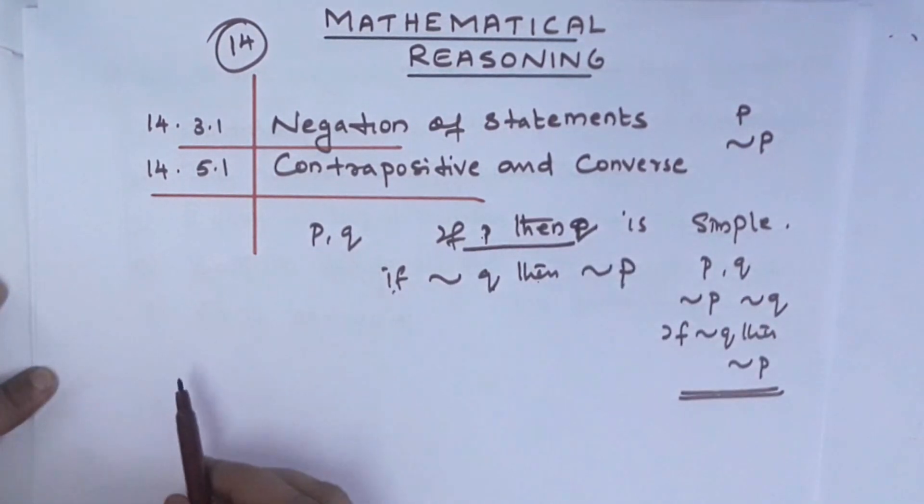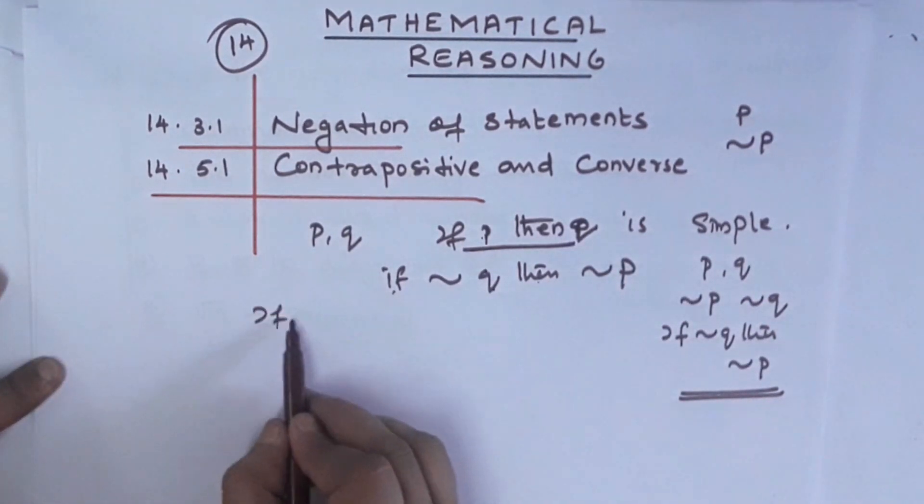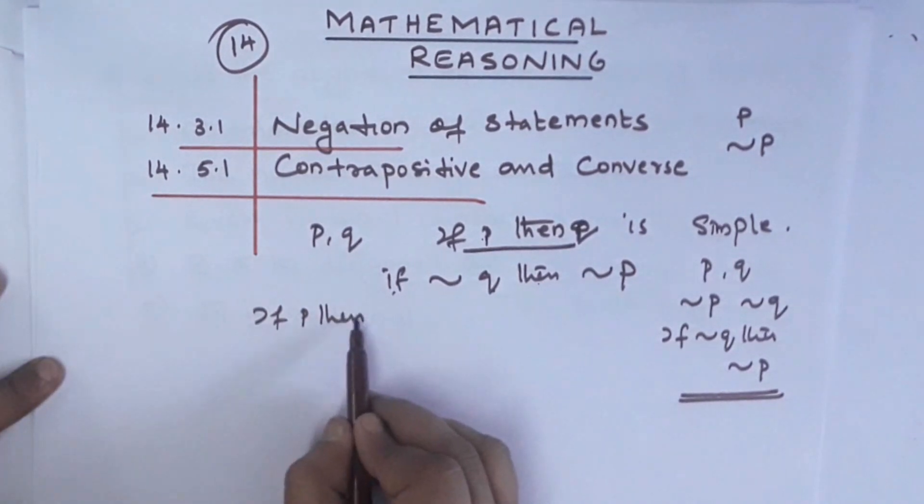Now this is the Converse. Converse: If P then Q becomes If Q then P.